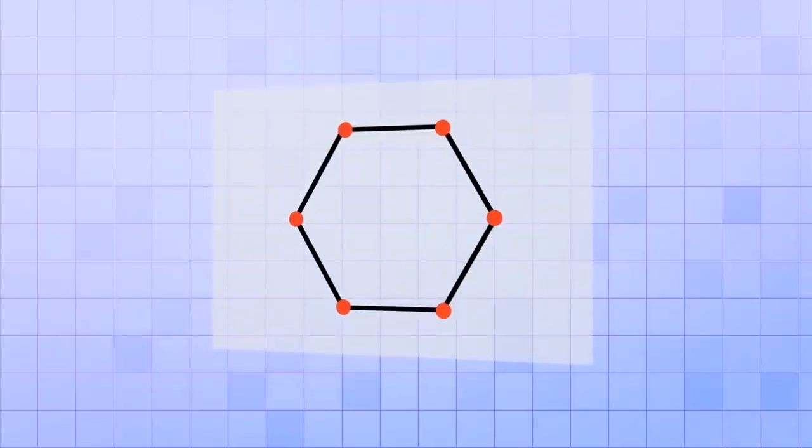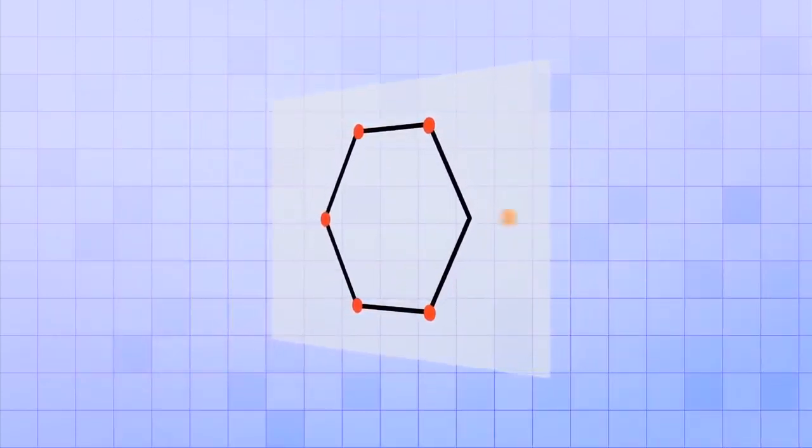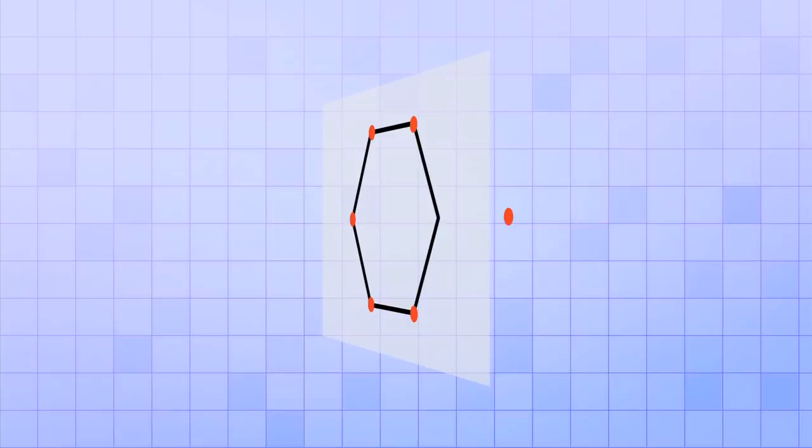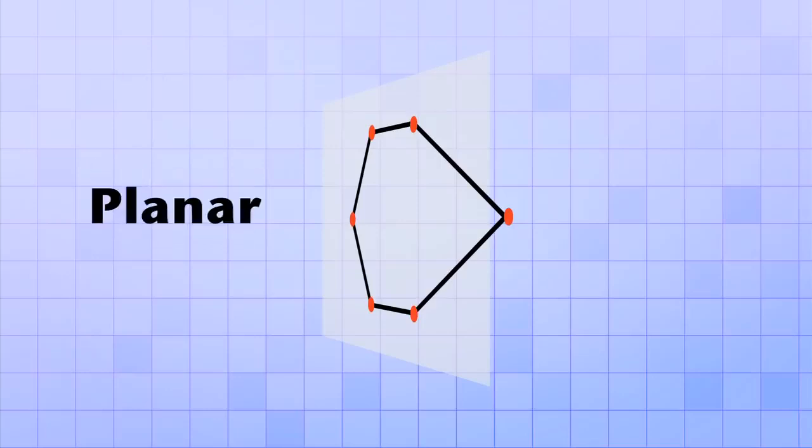If any one of the vertices were to move forwards or backwards so that it wasn't on the same plane as all the other vertices, then it wouldn't be a flat shape anymore. Flat shapes are also called planar shapes because all of their points are on the same plane.